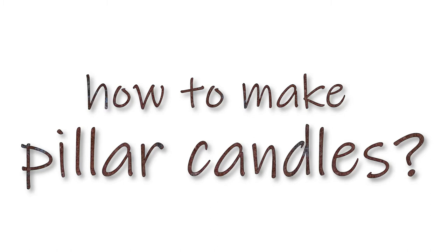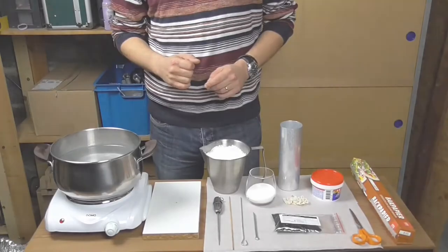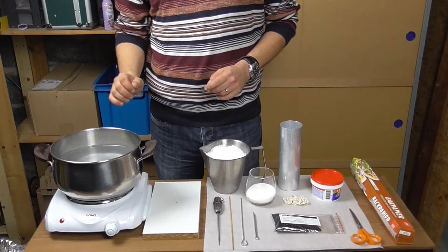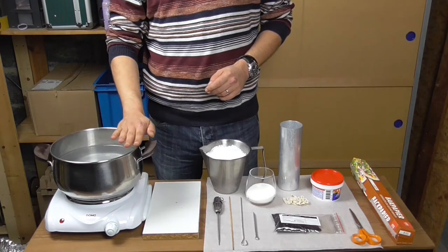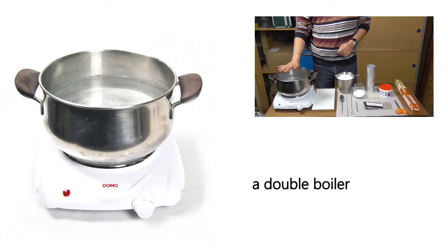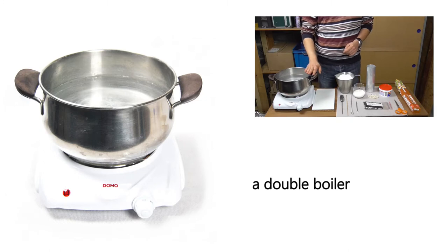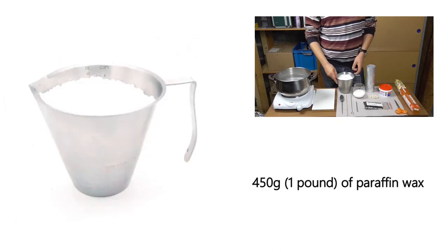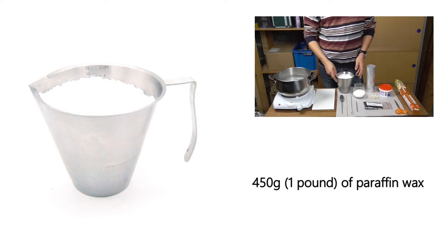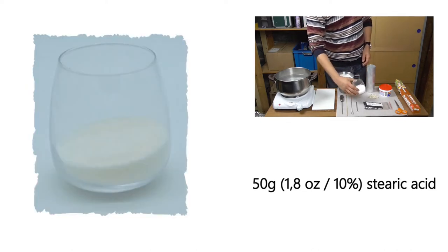To make pillar candles, we need the following supplies. As always, you will need a double boiler essential to melt the wax. Enough paraffin wax to fill the mold and some more. Here, I have 450 grams or a pound of wax already in the melting pot.